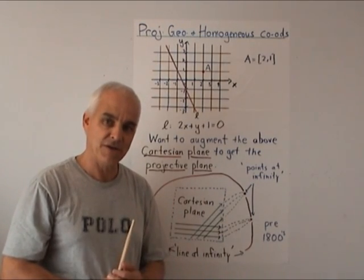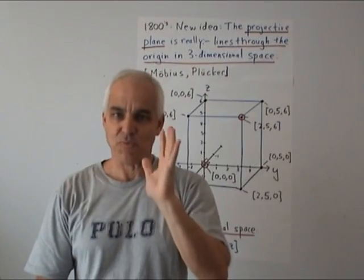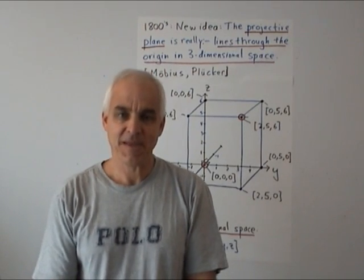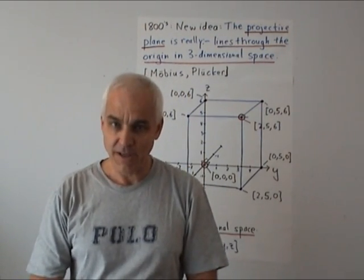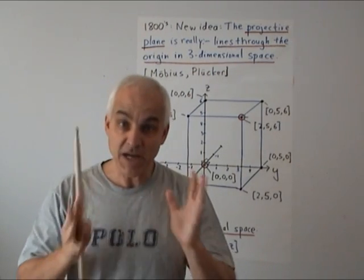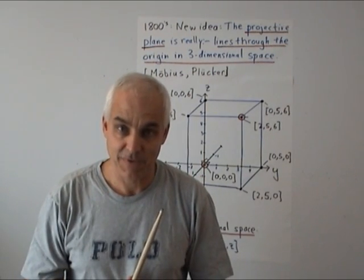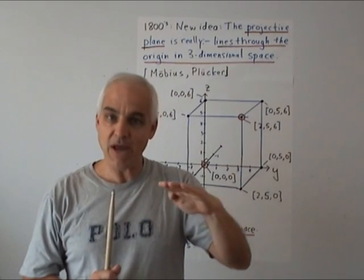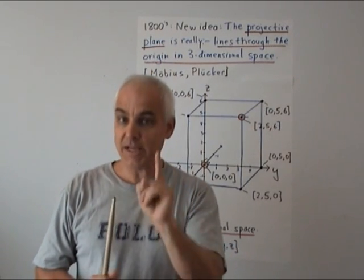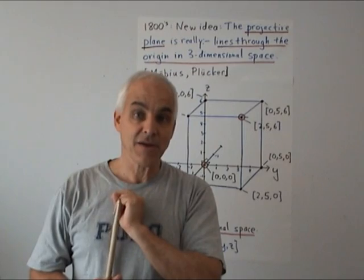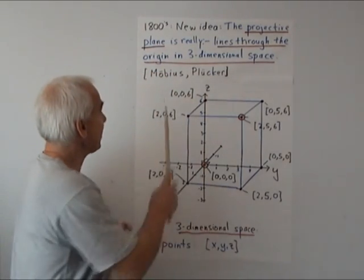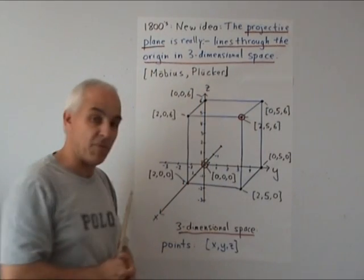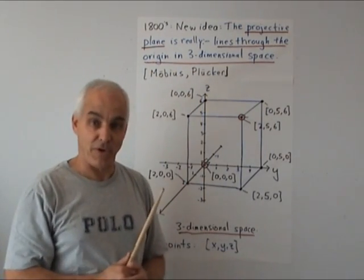This completely changed the direction of the subject and introduced all kinds of new ideas and techniques. It was really one of the most important ideas in all of the history of mathematics: the idea of homogeneous coordinates. The projective plane can really only be understood in the context of three-dimensional space.